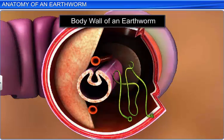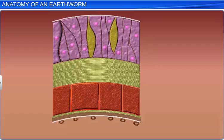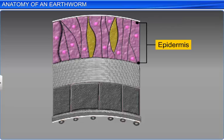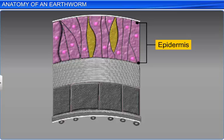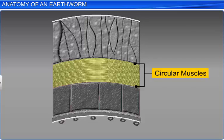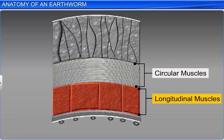The cross-section of an earthworm shows that the body wall is covered by a thin layer of cuticle, followed by a single layer of epidermis, which contains secretory gland cells. Below the epidermis lie two layers of muscles — circular and longitudinal muscles — followed by the innermost coelomic epithelium.